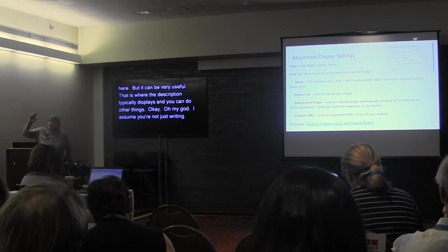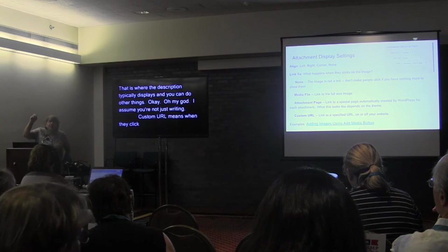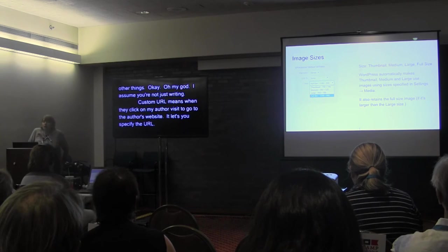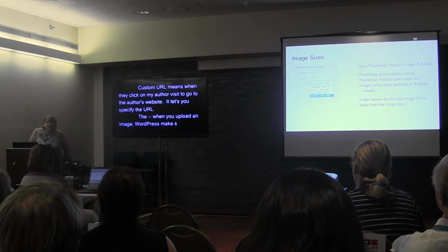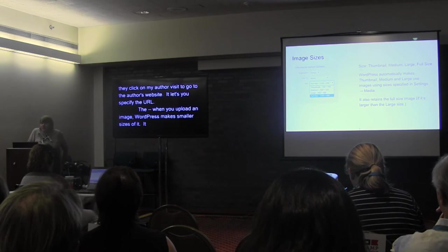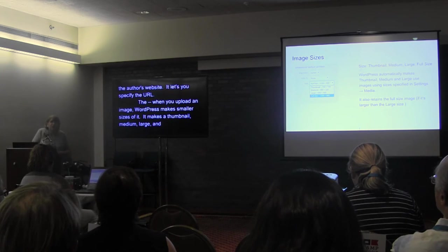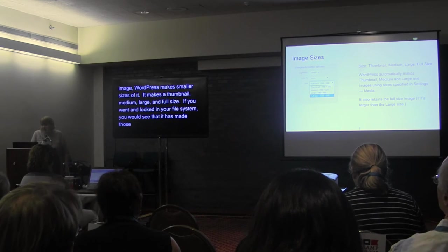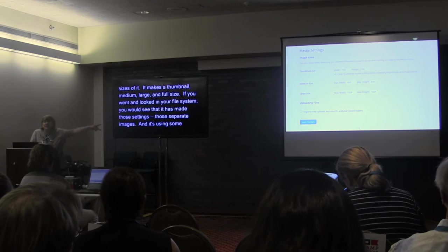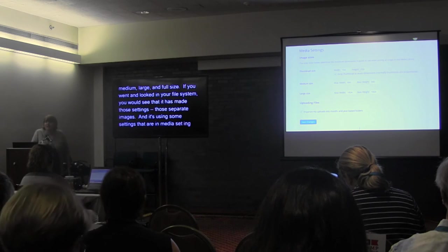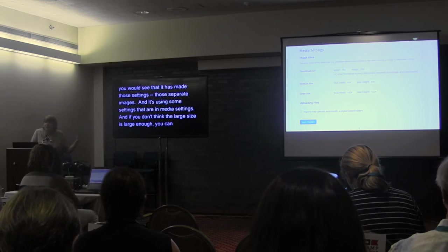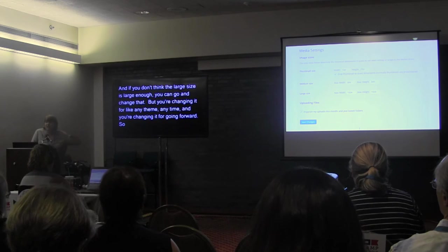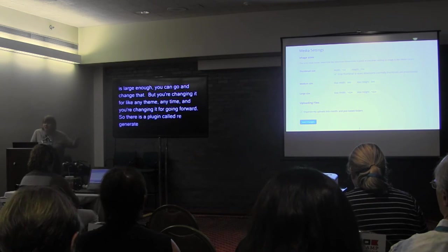Custom URL means you want them — when they click on the author's image — to go to the author's website. So you specify a URL. When you upload an image, WordPress automatically makes smaller sizes: thumbnail, medium, large, and full size. You can see those separate image files in your file system. These sizes are based on settings in Media Settings — if you don't think the large size is large enough, you can change that, but you're changing it for all themes going forward. There's a plugin called Regenerate Thumbnails that will redo all your existing images if you make a change to those settings.